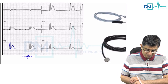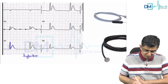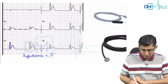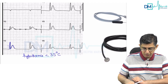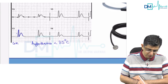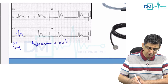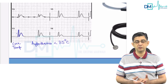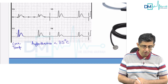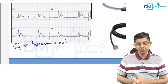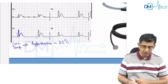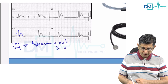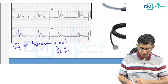Hypothermia in which J wave appears on the ECG is defined as a core temperature less than 35 degrees in adults. In pediatrics, core temperature is not measured; we take the axillary temperature, and if it is less than 36.5 degrees we say the neonate has hypothermia. Remember: 32 to 35 is mild, 28 to 32 is moderate, and less than 28 is severe hypothermia.